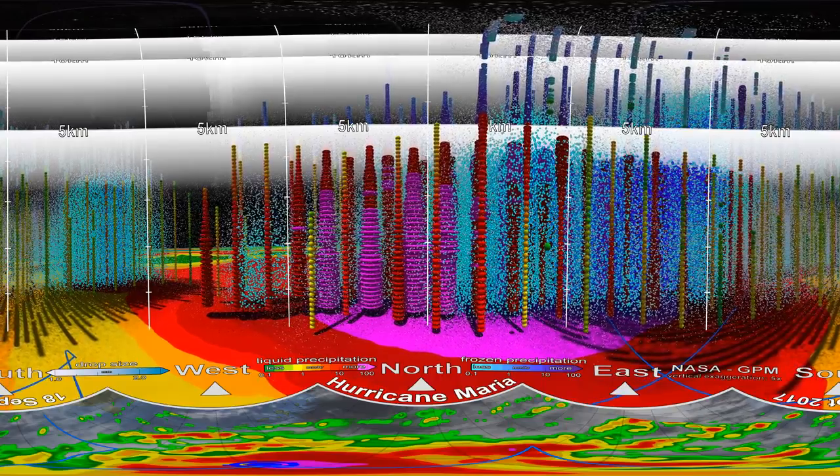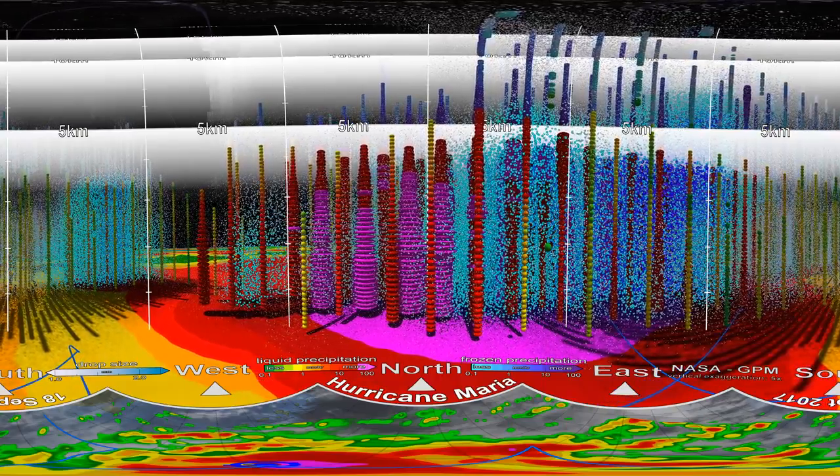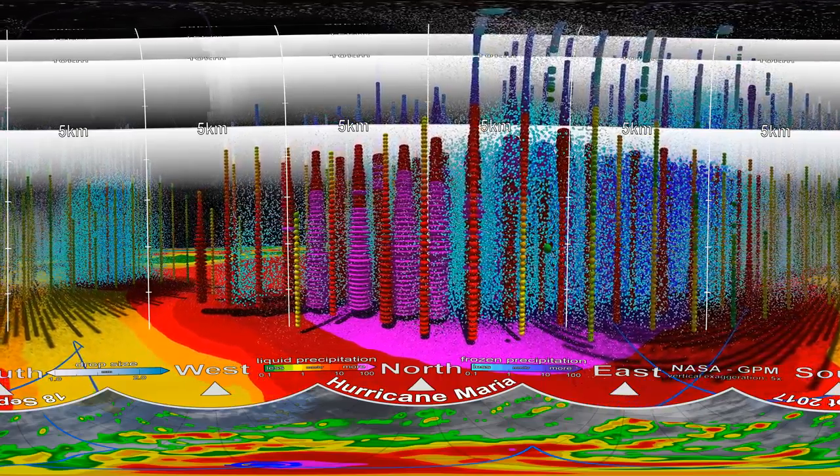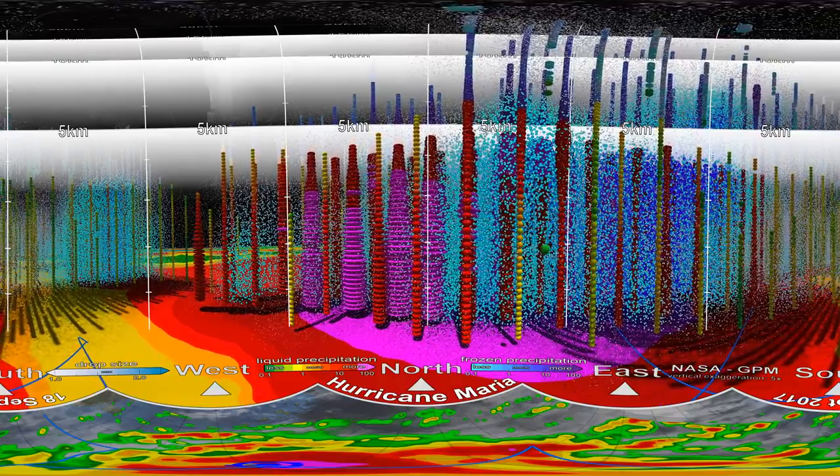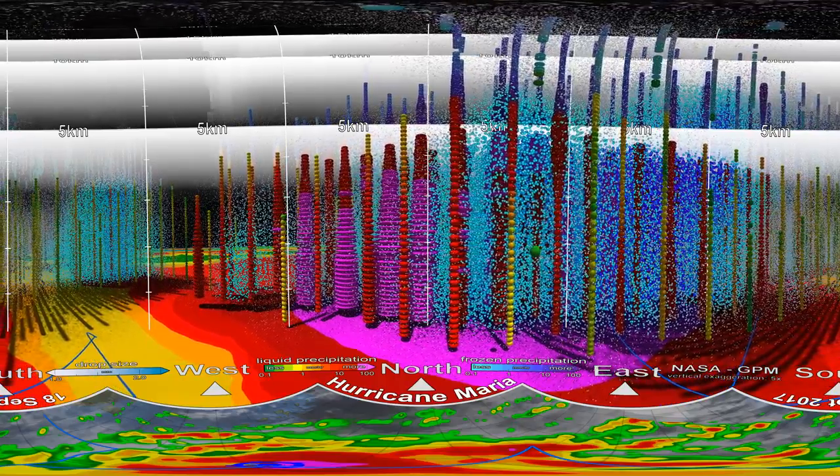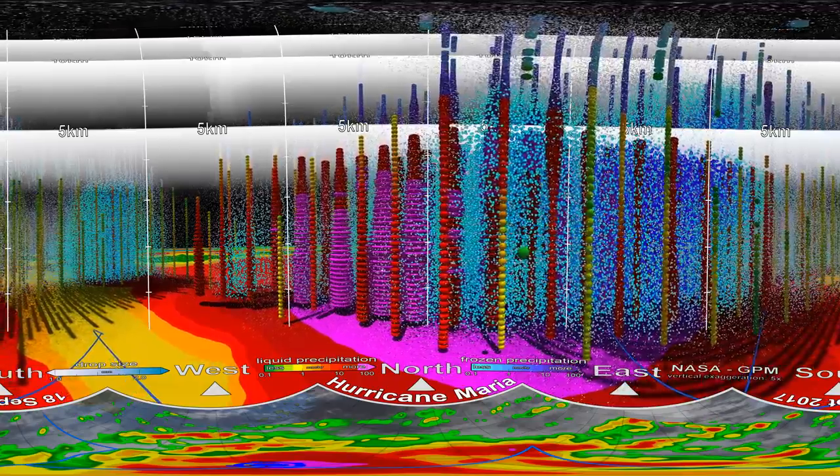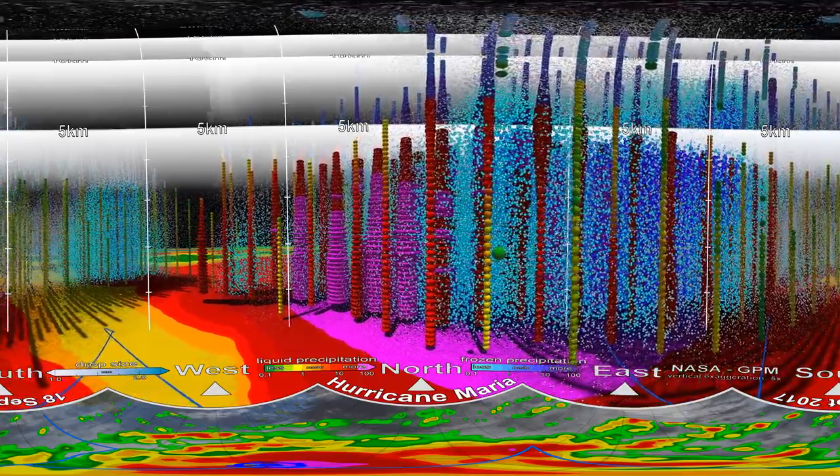These blue drops show the size and density of ice and water particles inside Hurricane Maria, which is also known as drop size distribution. Big drops are coloured in dark blue and small drops in light blue and white.